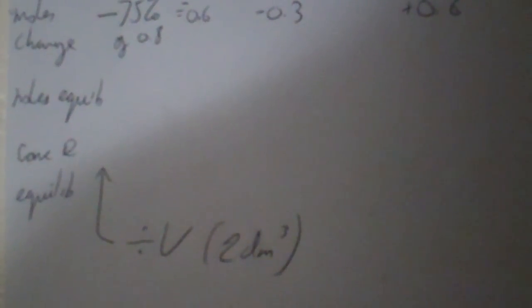Then you work out your moles at equilibrium, you've got to work out your concentrations at equilibrium. You've got to divide them each by 2, because the total volume is 2 dm cubed.